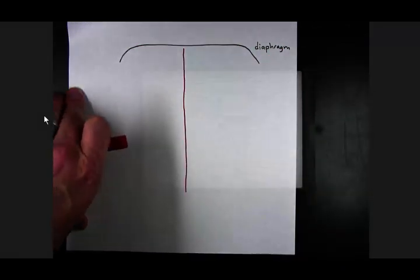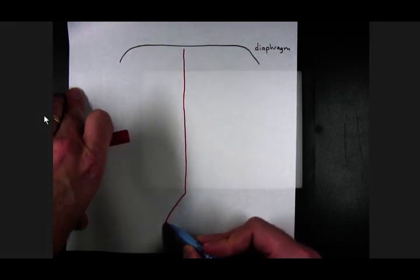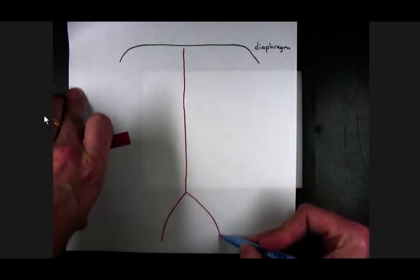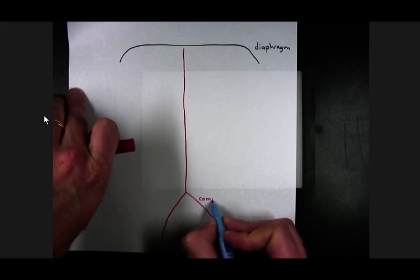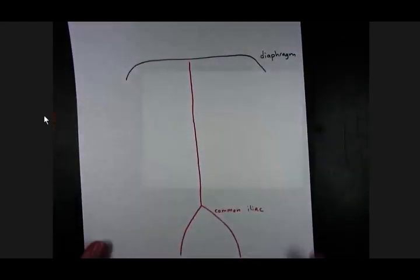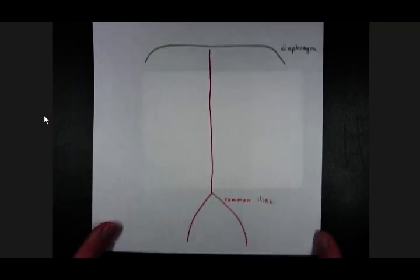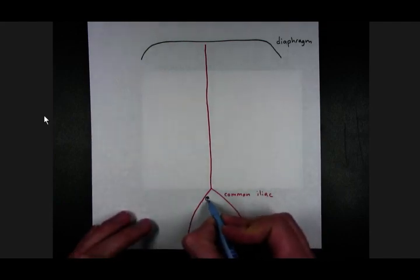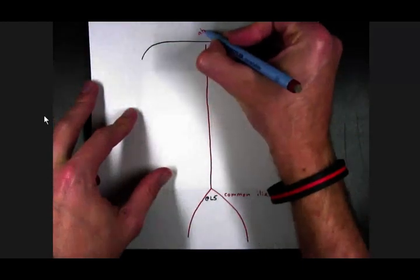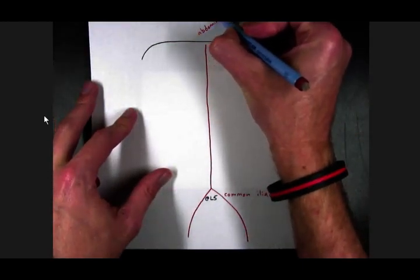And the abdominal aorta will bifurcate into common iliac arteries. This bifurcation happens typically at lumbar vertebra L5. I'm just going to label abdominal aorta.